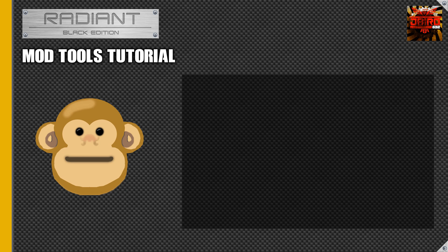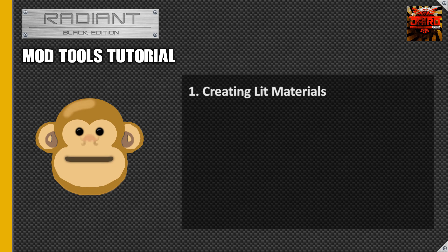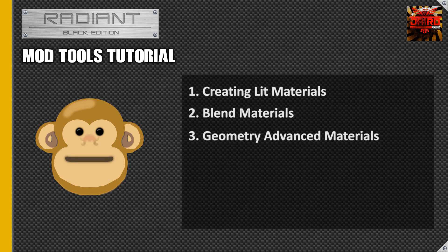Hey guys, Jaybird here and we're going to be doing a tutorial in APE today covering how to make or port over your own custom textures. I'll go over two examples: creating my own textures to be used in the Divide. We're going to cover how to create a generic basic material, how to create a blend texture for patches and decals, and lastly how to make a metal texture that actually looks like real metal in game.